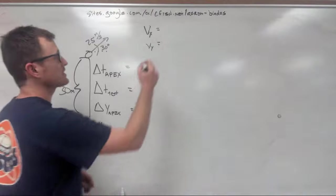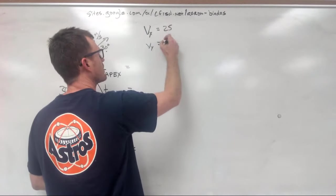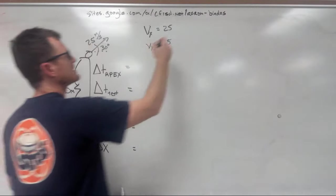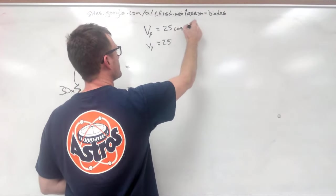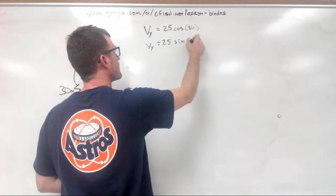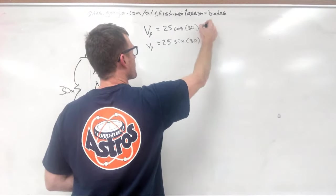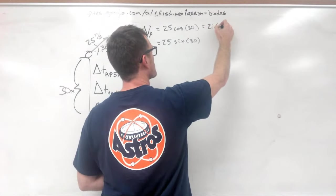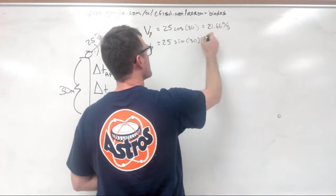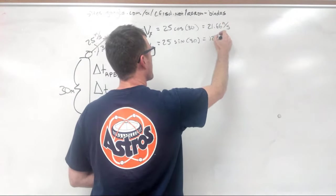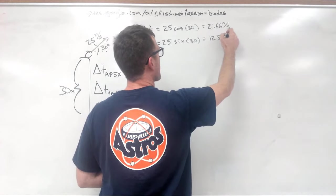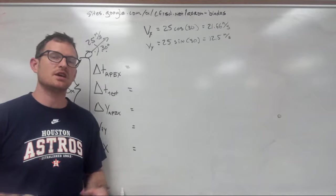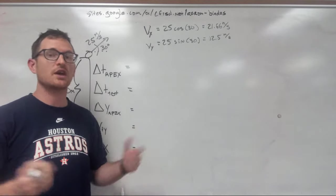We've talked about this a bunch in class, and calculating our Vx and Vy is going to be equal to our velocity times the cosine or sine of our angles. For our Vx, putting this into our calculator, we get 21.66 meters per second, and for our Vy, we get 12.5 meters per second. That tells us how fast the object is moving in the Y and X directions.